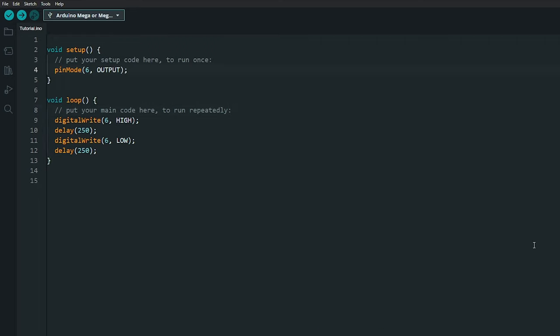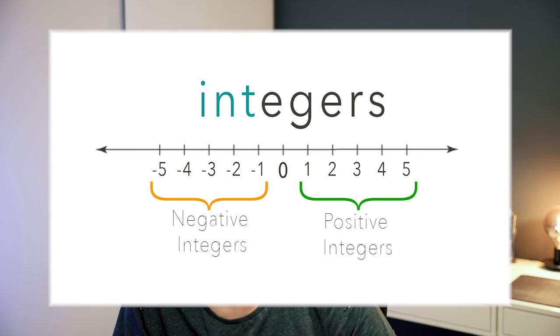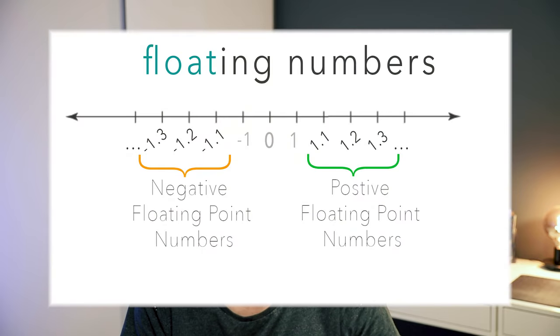That's where variables come in. A variable is a storage container — it holds bits of data such as numbers, words, or true/false statements. Think of it as a labeled box that allows you to keep track of bits of data. We've got two types of numerical variables: integers, which are your whole counting numbers (positive and negative), and floats — floating point numbers like 1.1, 1.2, 1.3 — any number with a decimal point.